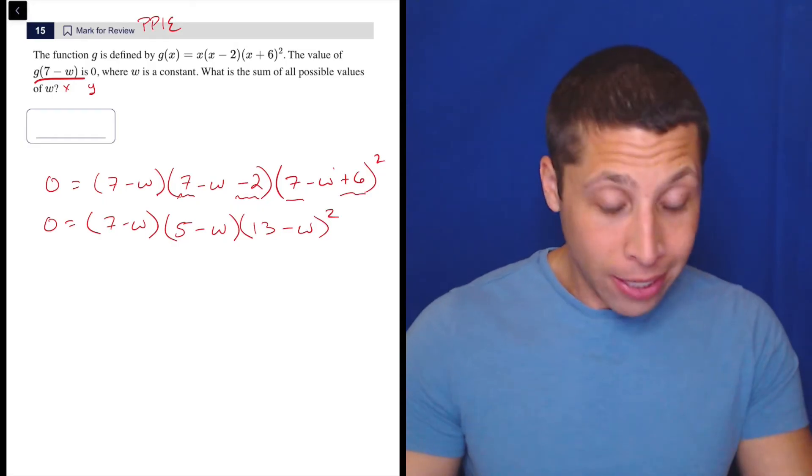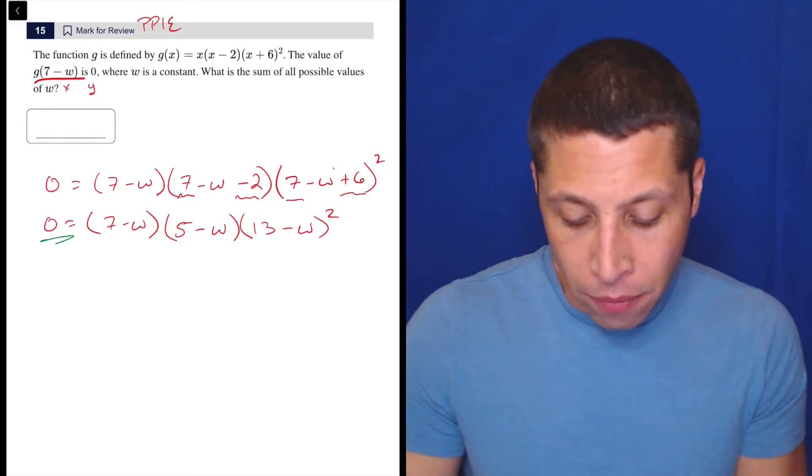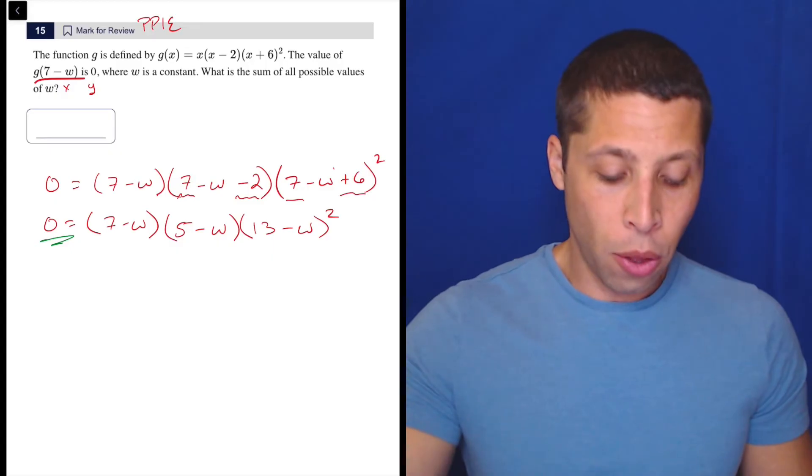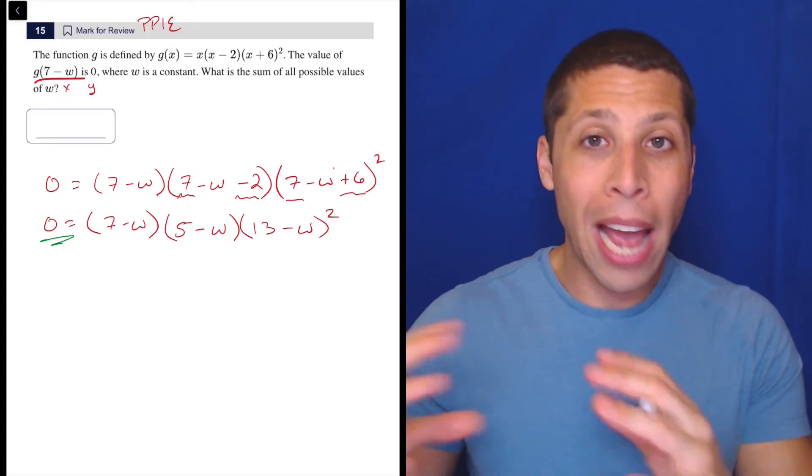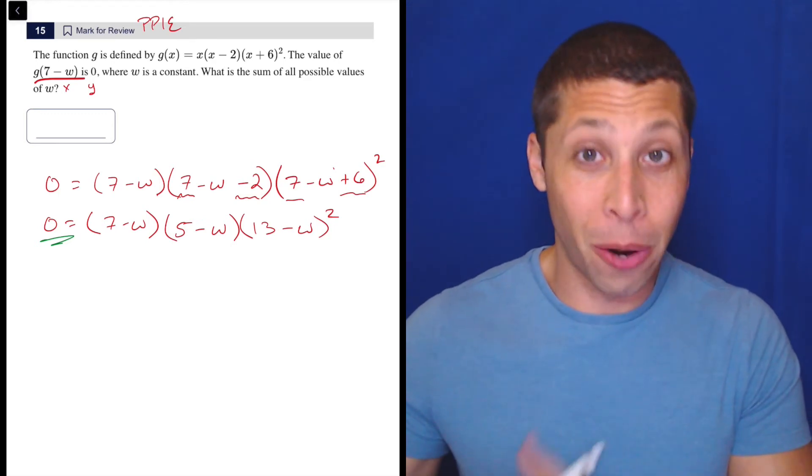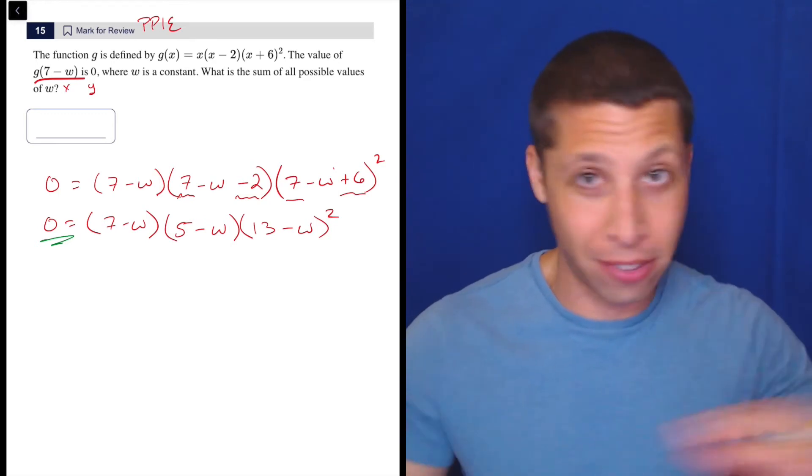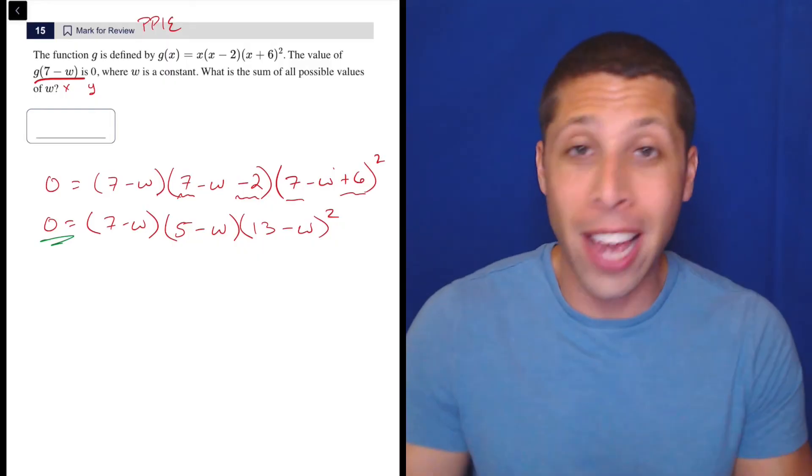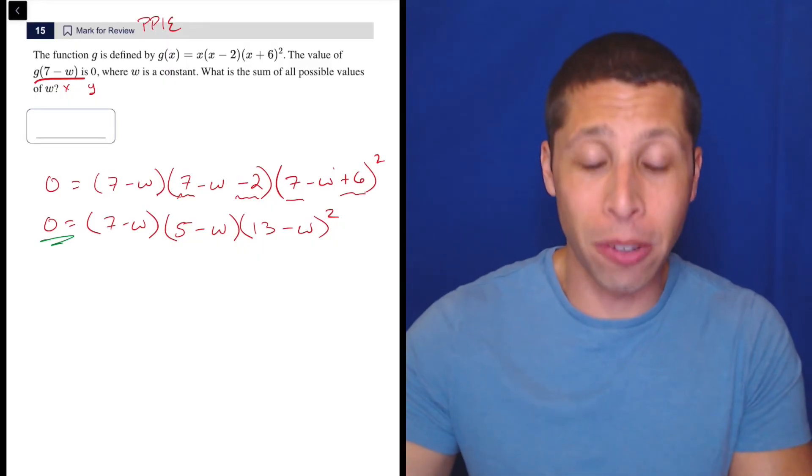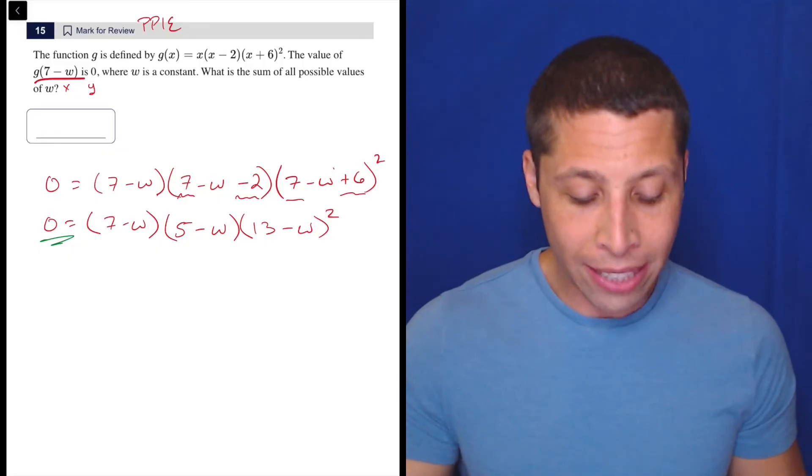Now I'm basically done, because at this point, remember if these things are equal to 0, the whole point of factoring, the entire reason we factor is to find what happens when y is equal to 0, without having to go through a whole graphing situation. This is giving us the x-intercepts, which is the points on the x-axis where y is equal to 0. And by putting them in these factors, we get to treat this thing as separate equations.